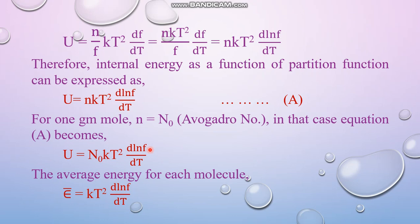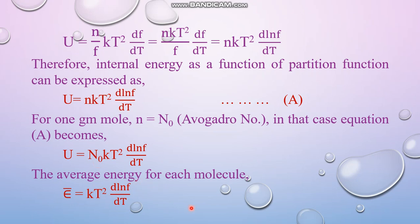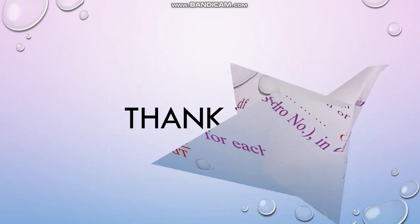And what about the average energy of each molecule? In that case you have to divide this by N_0. This is the energy of N_0 number of particles. So if it is divided by N_0 then this N_0 would be cancelled out. Then it would become kT squared d ln F by dT. So this is the average energy for each molecule or for each particle. So that's all about the relationship between internal energy and partition function F.